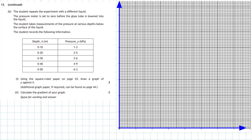We're asked to draw a graph. When doing a graph, take your time, work out the scale first, then plot the points and draw the best fitting line. The x-axis will be depth in metres, and the y-axis will be pressure in kilopascals, with zero at the bottom of the graph.